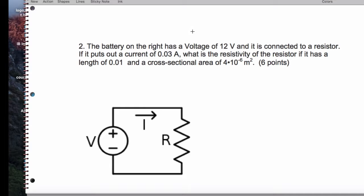And we have a current of 0.03 amps. We want to know the resistivity of the resistor if this is the length of the cross-sectional area. I put the word cross-sectional area there.